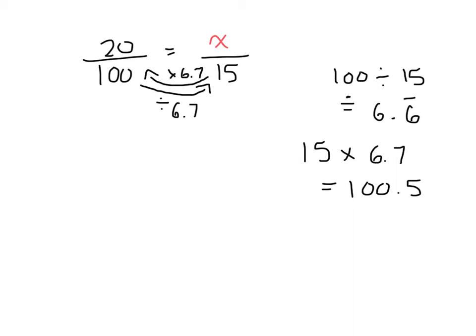We get 100 decimal 5. So it's close enough to 100, because we had rounded this. So now what do we have to do? We know that the scale factor is divided by 6.7. So what do we have to do to the numerator? We have to divide it by 6.7. We also have to divide this by 6.7. So 20 divided by 6.7. We get 20 divided by 6.7 equals approximately 2.99. So let's round it off to 3. So x equals 3.